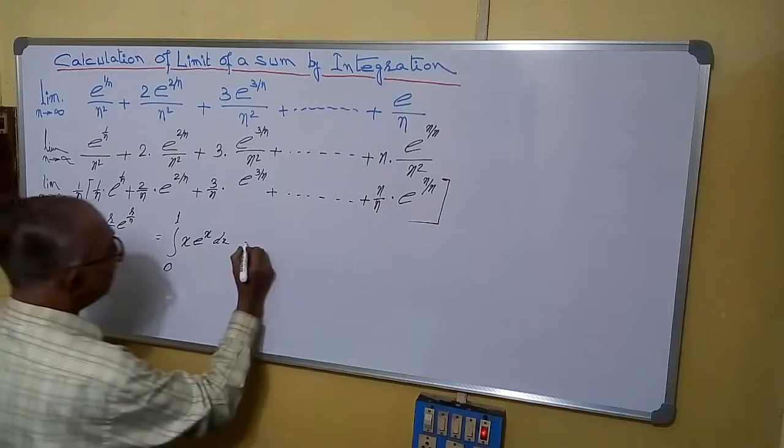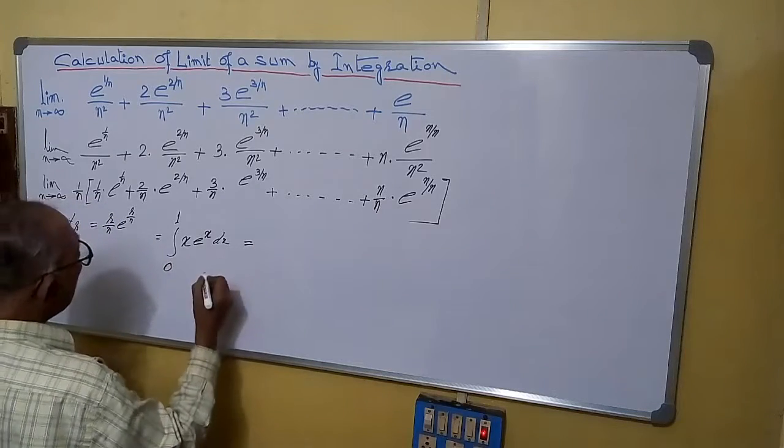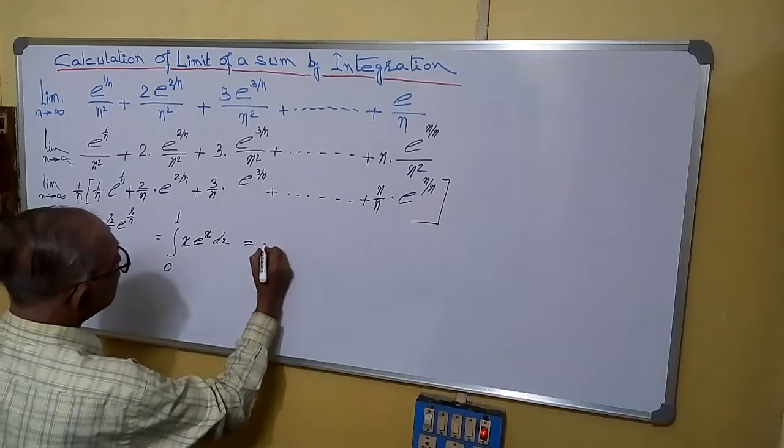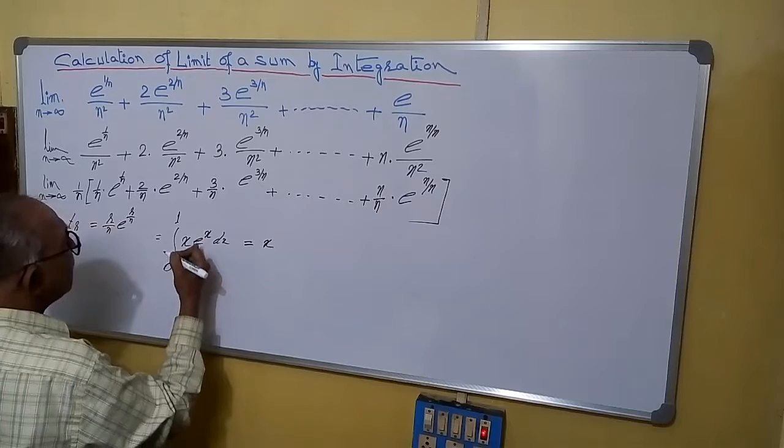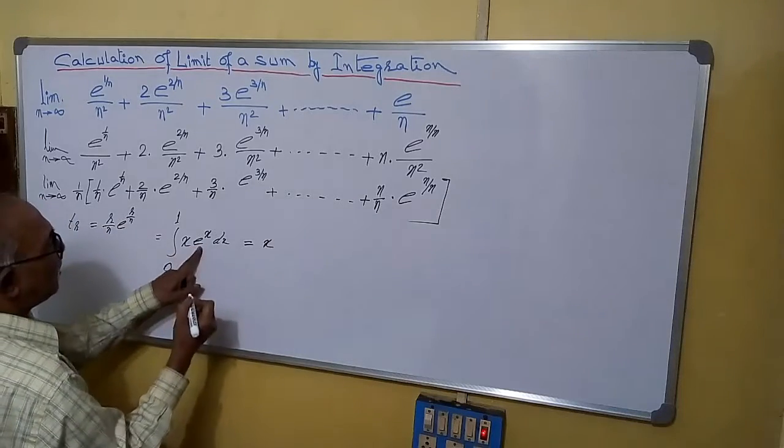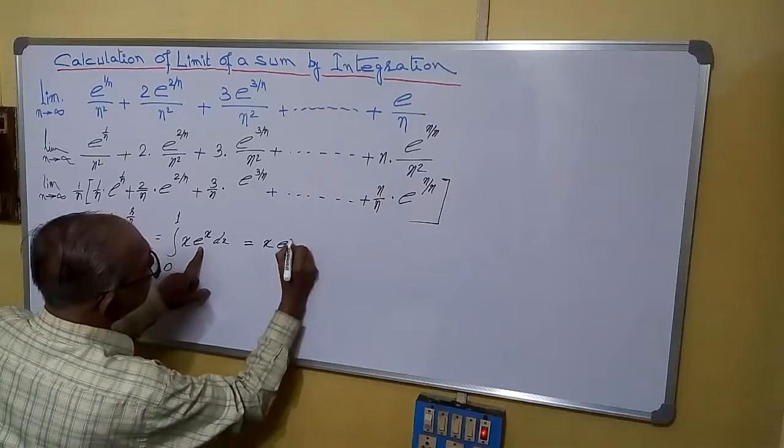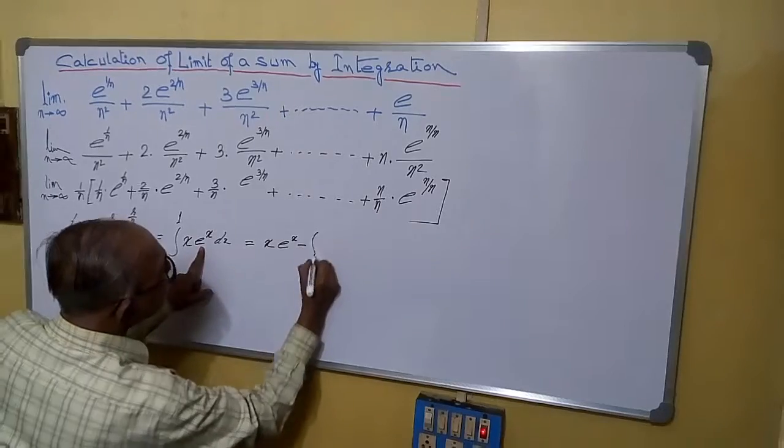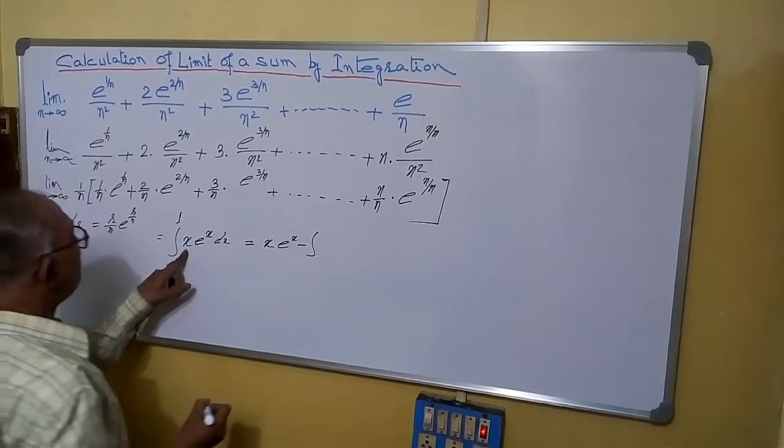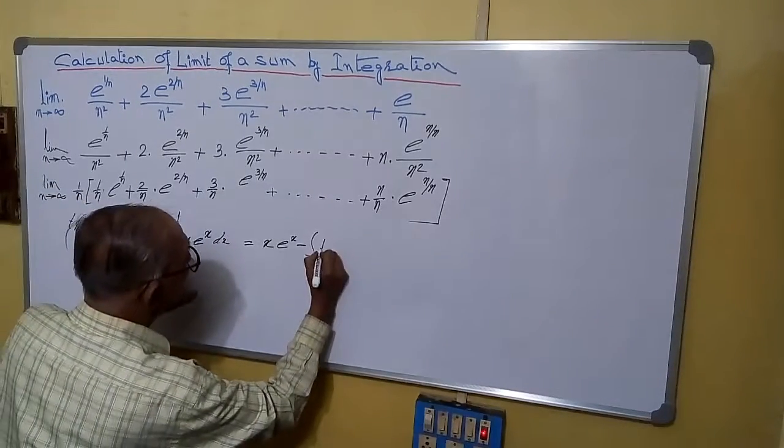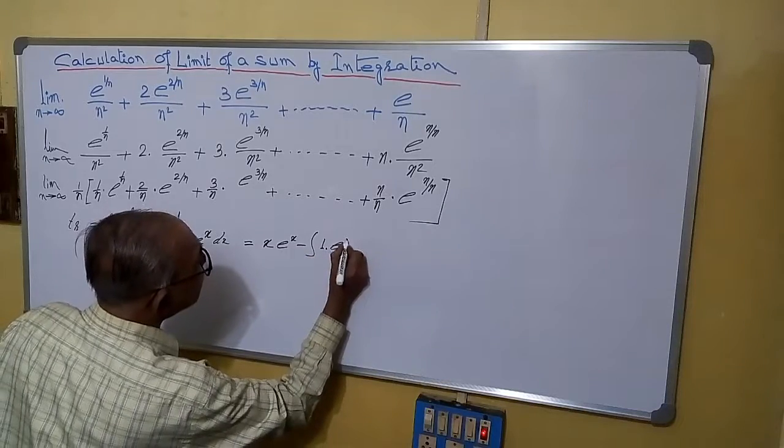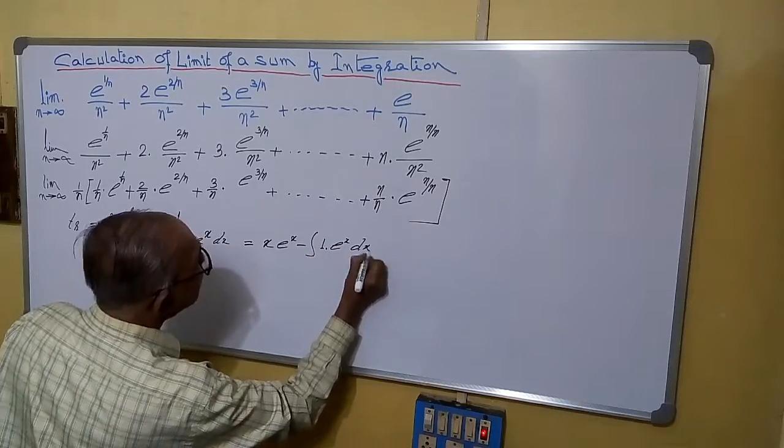Now this integration is by parts. x is first function into integral of second function. Integral of e^x is e^x, minus within integration, derivative of first function is 1, into integral of second function, this one.